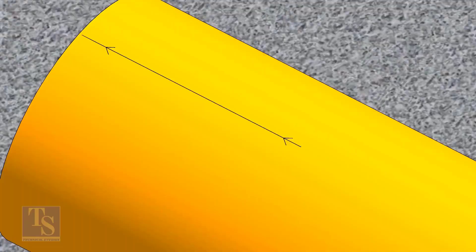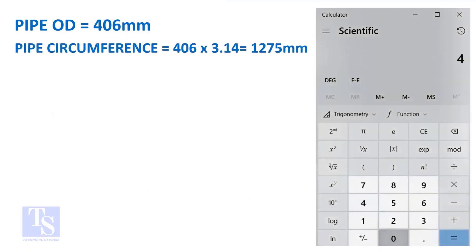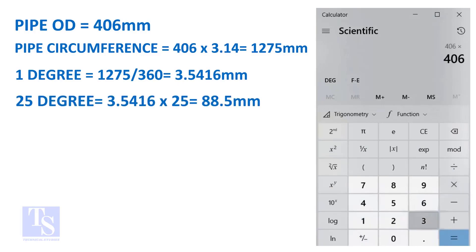Let us calculate the circumferential distance or arc length for 25 degrees. Multiply the OD by 3.14, you will get the circumference of the pipe. Divide the circumference by 360, you will get the arc length of 1 degree. And finally, multiply the 1 degree arc length by 25. Now you have the arc length of 25 degrees.